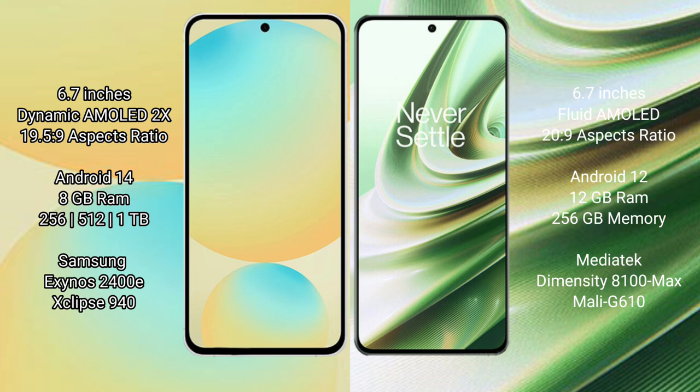The Samsung Galaxy S24 FE runs on the Android 14 operating system, while the OnePlus 10R runs on Android 12. The Samsung Galaxy S24 FE comes with 8GB RAM and 128GB, 256GB, or 512GB internal storage options, powered by the Exynos 2400E processor with a GPU.